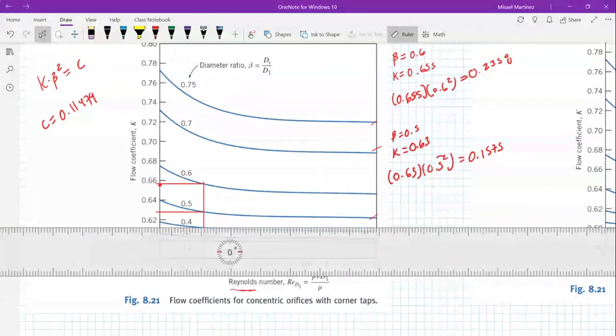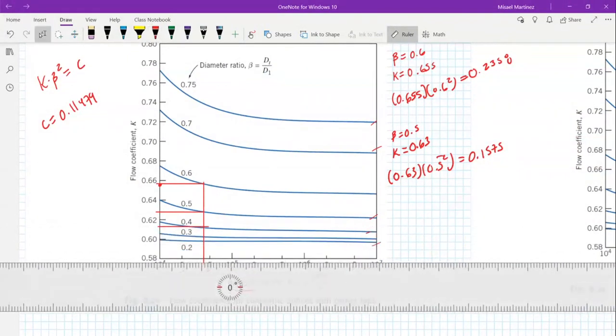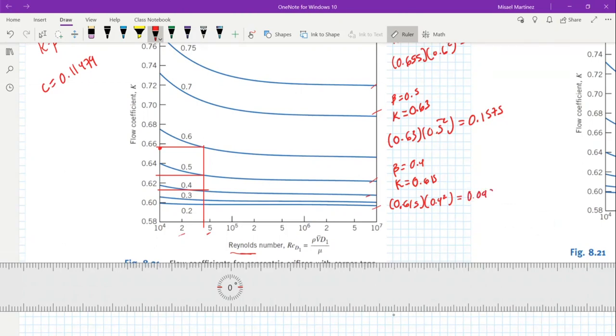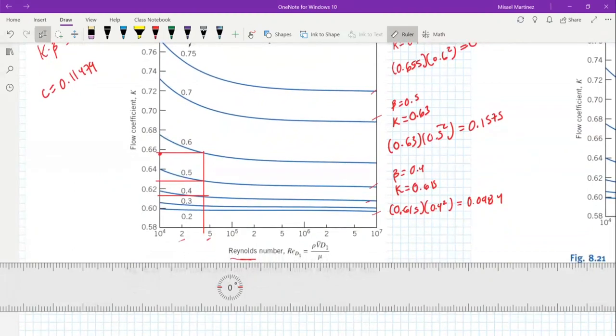Let's try the lower, another lower beta, 0.4. Beta equals 0.4. Our K will be about 0.615 or so. 0.615 times 0.4 squared gives us 0.0984. We are below. Now, we have gone below the value.